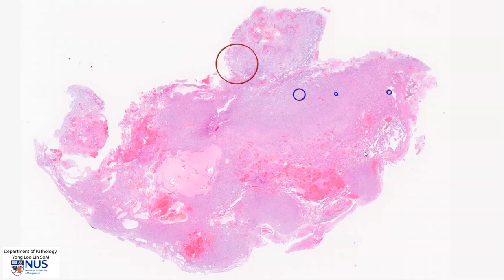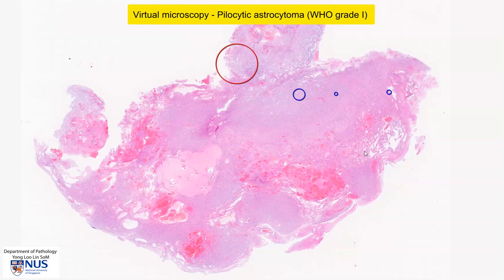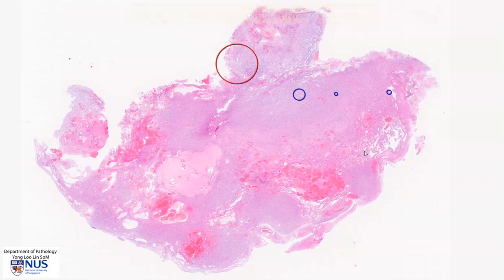This is a virtual microscopy slide of a pilocytic astrocytoma, which is a low-grade, WHO grade 1 glial tumor, or glioma. This particular tumor is taken from the posterior fossa.